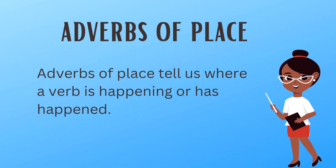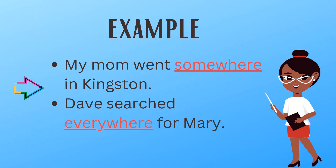Adverbs of place tell us where a verb is happening, or has happened. For example, my mom went somewhere in Kingston. And Dave searched everywhere for Mary.